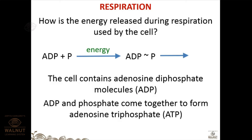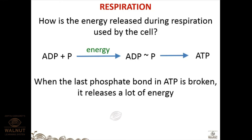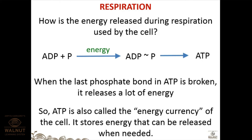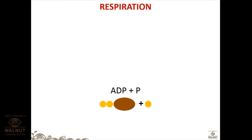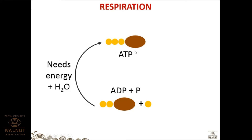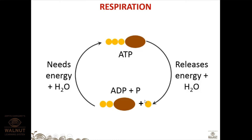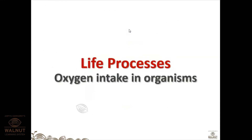When the last phosphate bond in ATP is broken, it releases a lot of energy — that is why it is the energy currency of the cell. Breaking ATP gives back ADP plus inorganic phosphate, and this cycle keeps going. It is like a rechargeable battery: ADP plus inorganic phosphate plus energy forms ATP, and ATP breaks back down to release energy.